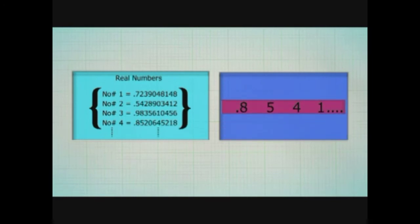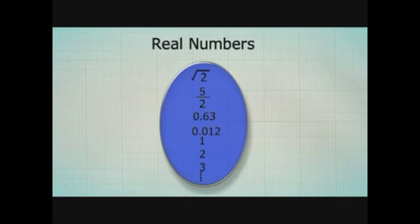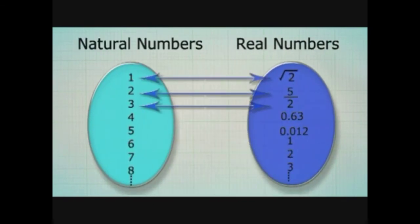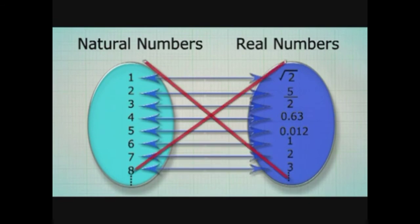Now this number which I have just created will not correspond to any number on my list. How do I know that? See, it won't match the first number because the first digit is different. It won't match the second number because the second digit is different. It won't match the third number because the third digit is different, and so on, infinitely. We have created a number that is not in our list. And so we can conclude that this set of real numbers does not have a one-to-one correspondence with natural numbers.